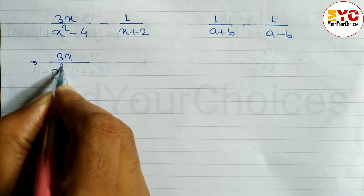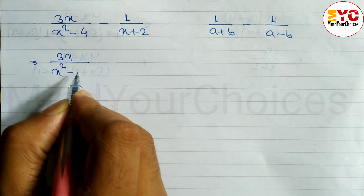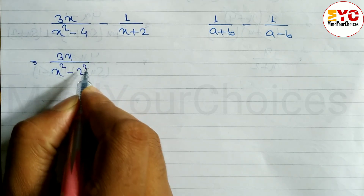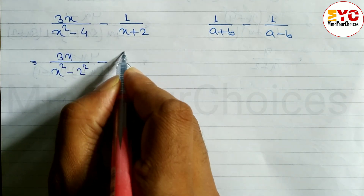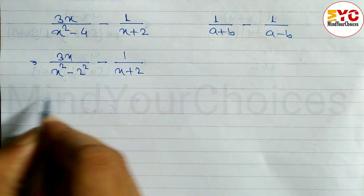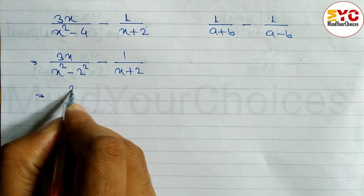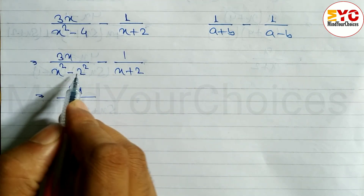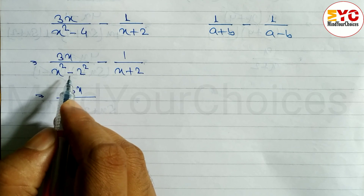First of all we have to convert into the form of a formula. So we can write x squared minus, and in the place of 4 we write 2 squared, minus 1 divided by x plus 2.